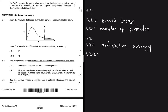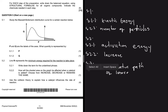Question 5.2.2 asks how the shaded area on the graph would be affected when a catalyst is added — choose from increase, decrease, or remain the same. Obviously it's going to increase. Question 5.3 asks me to explain why it increases when a catalyst is added.